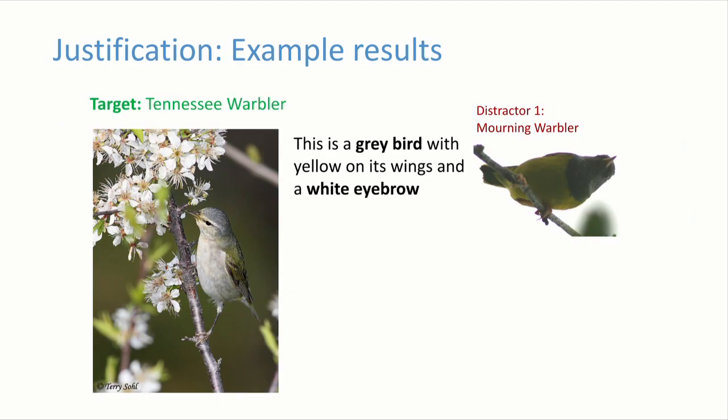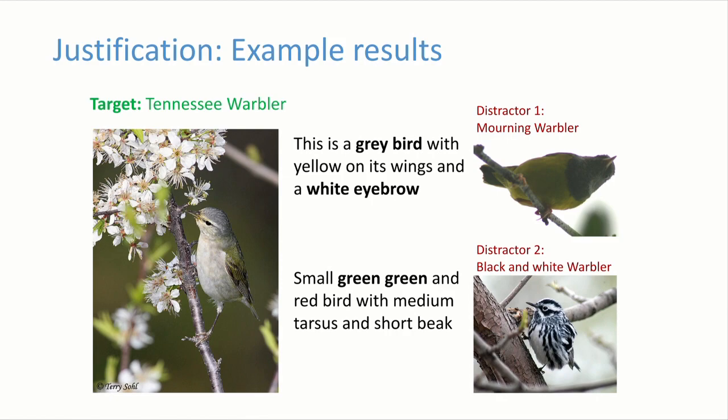A second example: the Tennessee warbler on the left with another type of warbler as context. The description in this context is 'a gray bird with white eyebrows' — the white eyebrows being distinctive. If you use another context — another type of warbler that also has white eyebrows — the description changes and becomes more discriminative regarding that context, like 'small green bird,' though still not very well-formed.